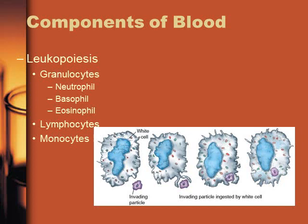Leukopoiesis is the creation of white blood cells, just as erythropoiesis is the creation of red blood cells. Granulocytes — neutrophils, basophils, and eosinophils — are full of granules containing chemical mediators like histamine. Lymphocytes have immune memory. Monocytes are the pac-men that eat and destroy invading particles.